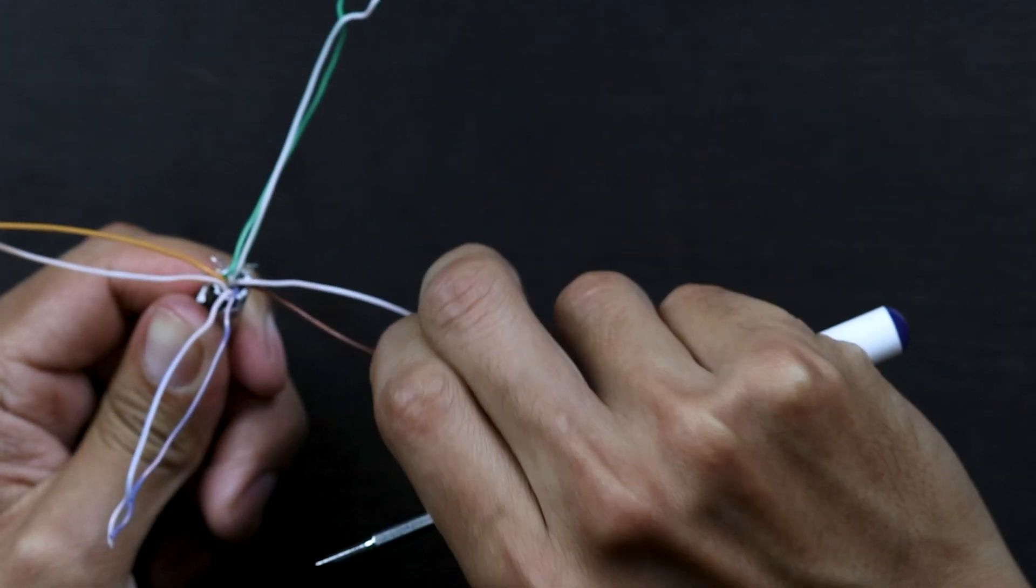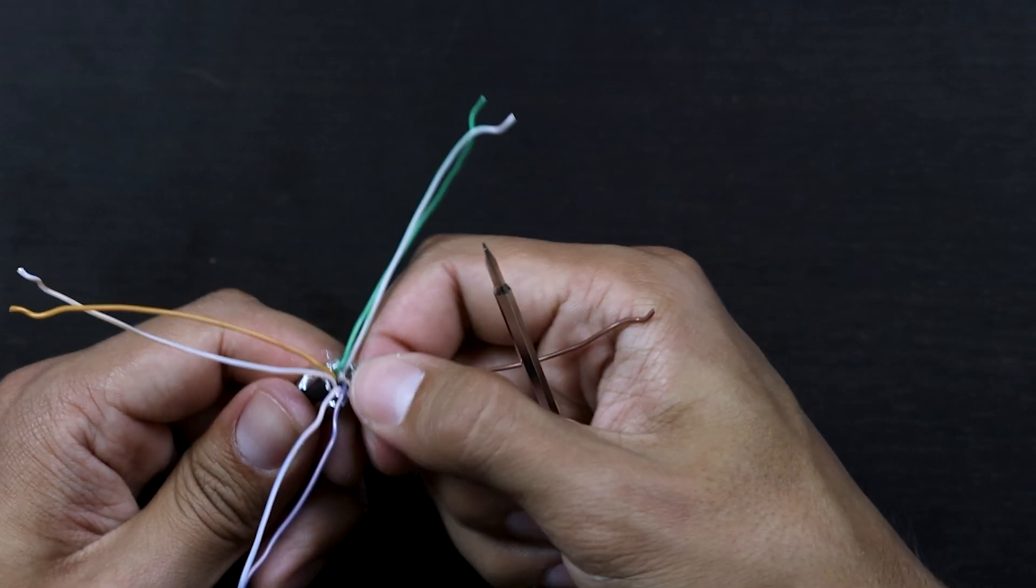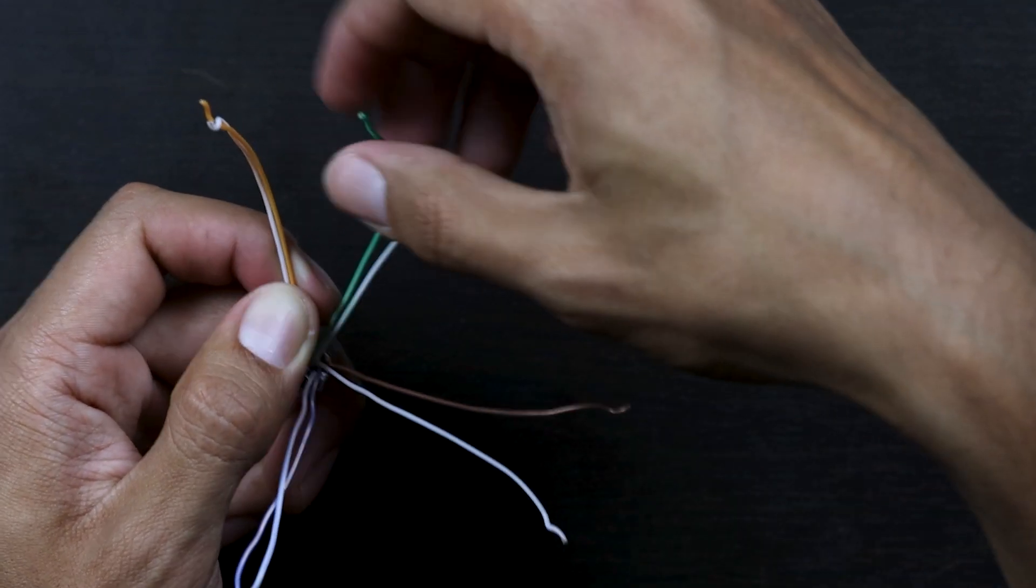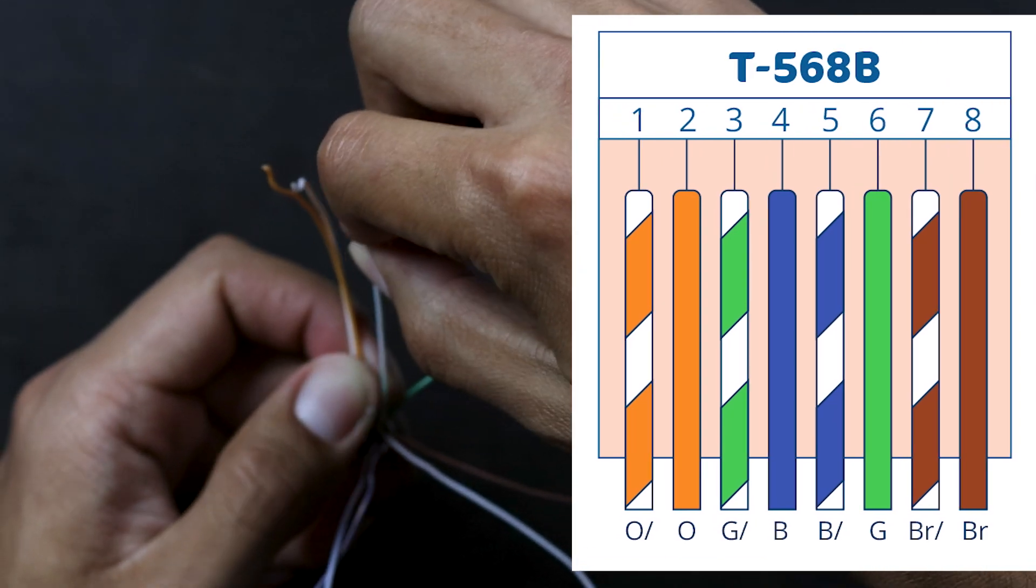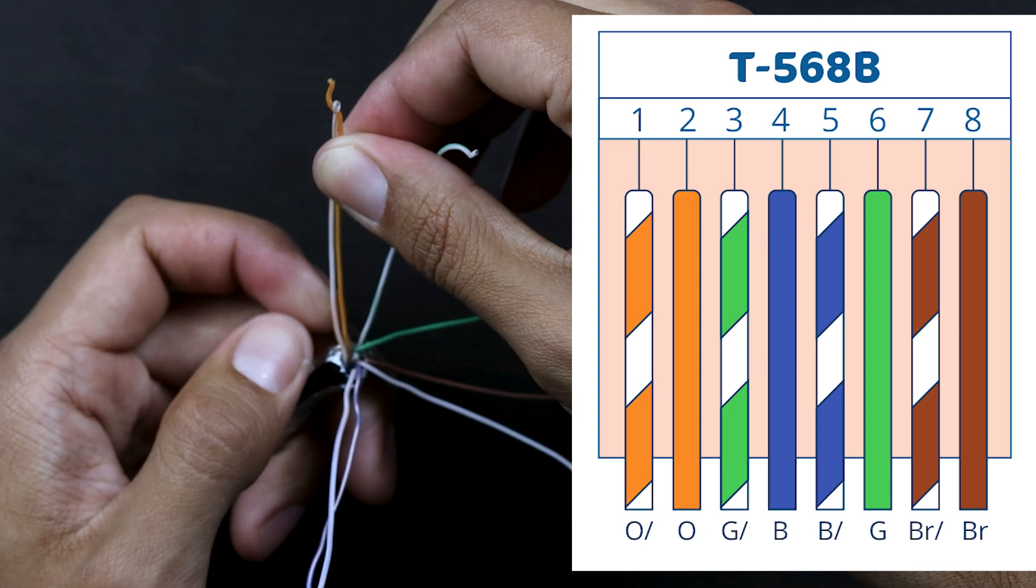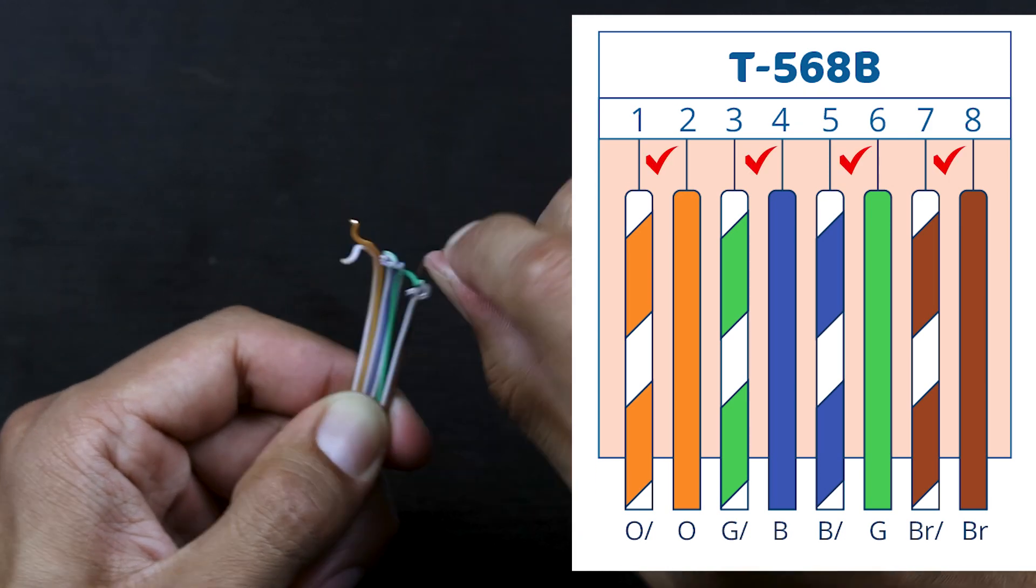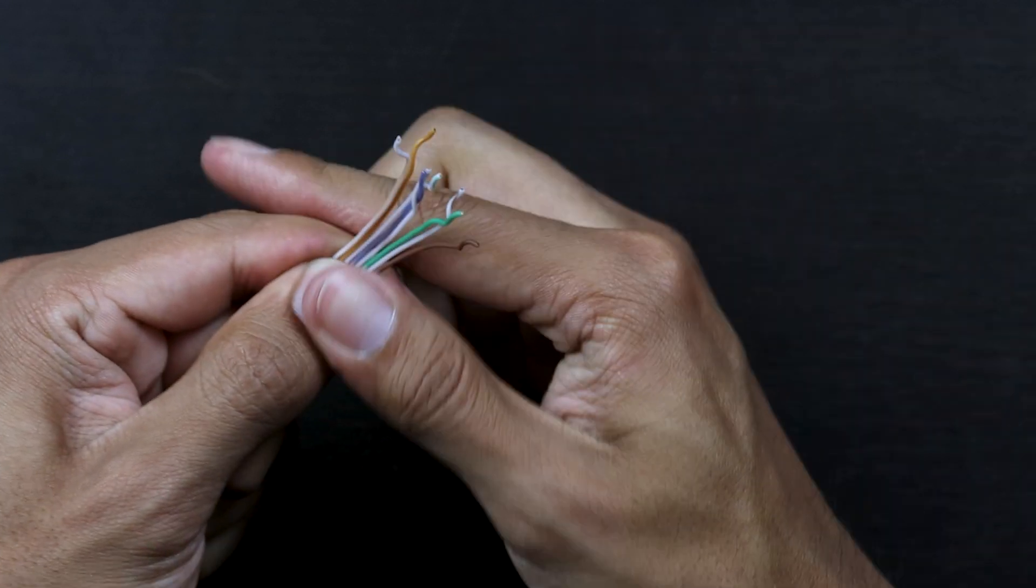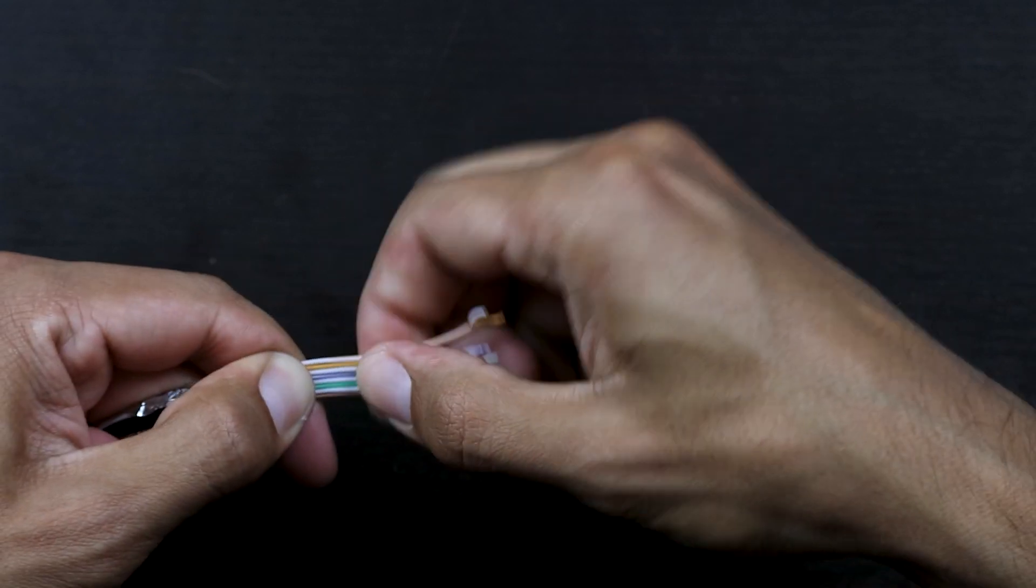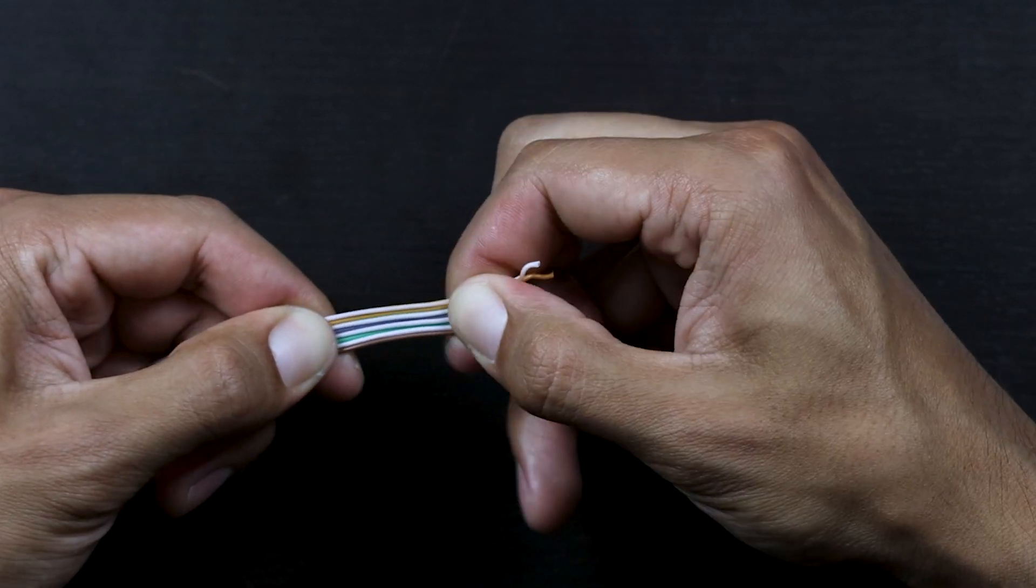You have all four of your pairs separated. You are able to start lining them up. We'd like to terminate a 568B and up on the screen we'll have that color pattern up for you just so you can follow along. It starts out with white orange, orange, white green, blue, white blue, green, and white brown, brown. Typically I'll flatten each conductor out as I lay it on top of another. And if you look at it, it kind of looks like a ribbon just all in order.